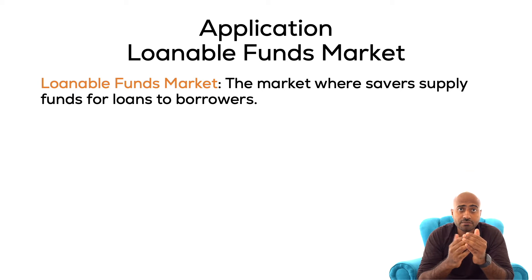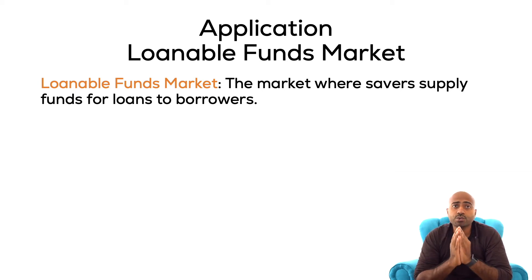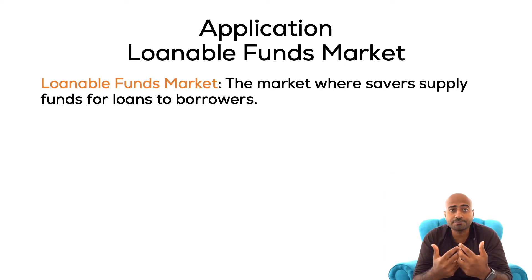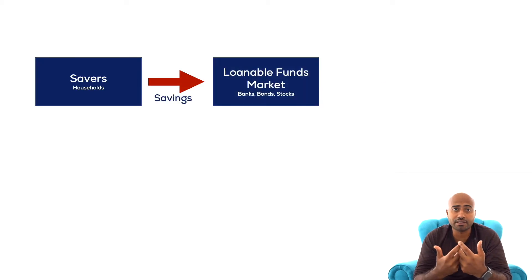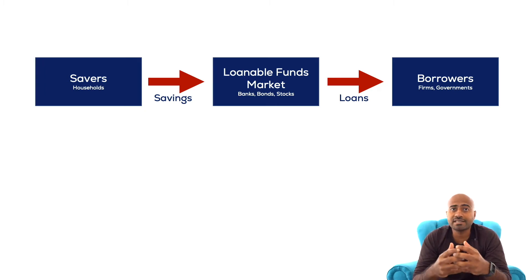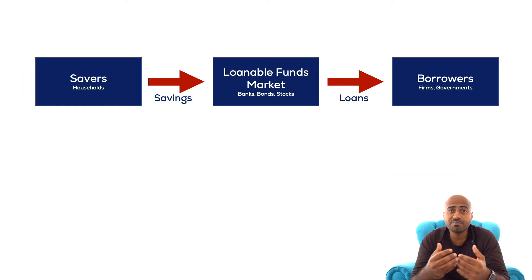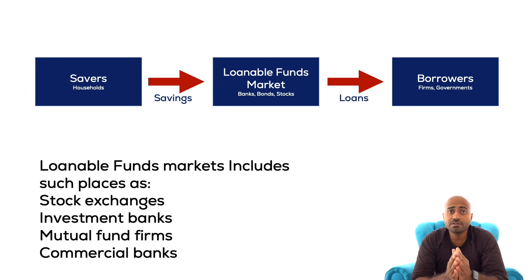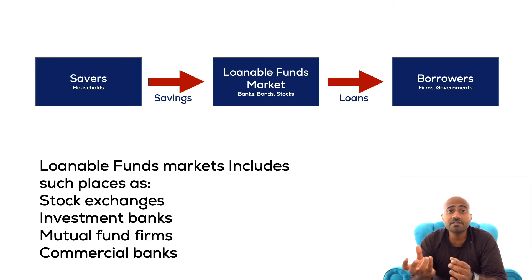First, there are two sides to the market. Savers — those are households or individuals with excess funds — supply money to the market. On the other side, you have demanders of money, also referred to as borrowers. This market exists in any place that assists with connecting savers and borrowers. These markets can be in the form of stock exchanges, investment banks, mutual funds, or commercial banks.